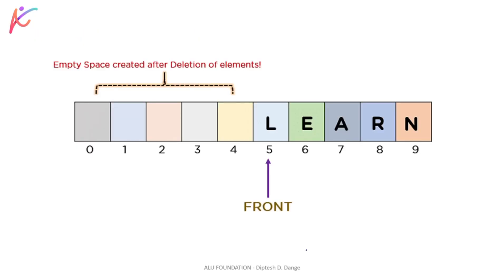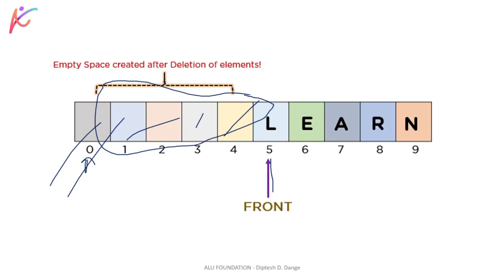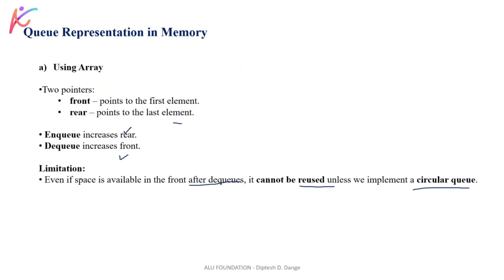Now let's talk about the limitation of array-based queue. When elements are removed from the front, the front pointer moves ahead. Even if space is available in front after dequeues, it cannot be reused unless we implement a circular queue. This is the limitation of a simple array implementation — those front positions become wasted. Using a circular queue allows reuse of that space.